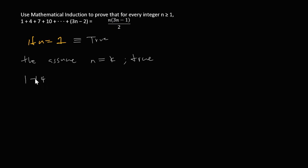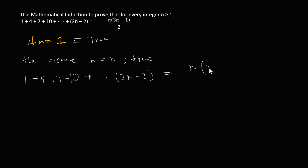If it is true for n equals k, then we have: one plus four plus seven plus ten, plus three k minus two, equals k times three k minus one, all over two. We are assuming it is true for k.